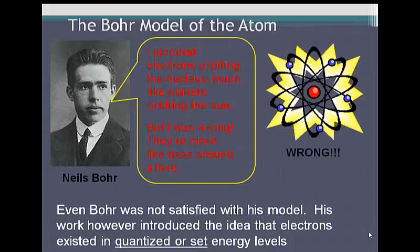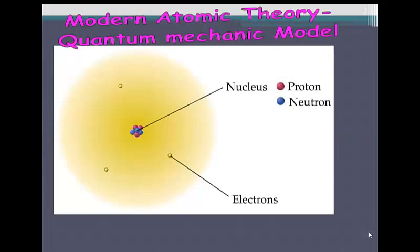Bohr admitted he was wrong. Bohr amended his view of the atom by saying that electrons don't orbit the nucleus like planets orbit the Sun, but they act more like bees buzzing around a hive, constantly in motion. From his theories, along with several others, we have the modern atomic theory, which is called the quantum mechanic model.